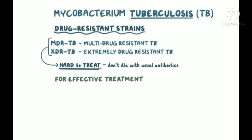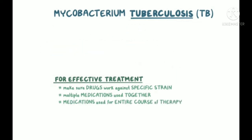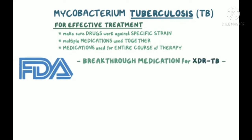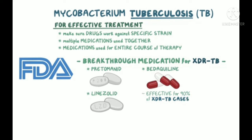The bottom line for effective treatment is to make sure the drugs being used will work against the specific strain of TB, that multiple medications are used together to prevent drug resistance from developing, and that medications are taken for the entire course of therapy so that all of the Mycobacterium tuberculosis is killed off. Recently, the US Food and Drug Administration approved a breakthrough medication for XDR-TB called Pretomanid. According to recent studies, a combination of Pretomanid, Bedaquiline, and Linezolid has been effective for almost 90% of XDR-TB cases. As an added bonus, this combination therapy can be taken orally and is very well tolerated compared with other XDR-TB drug regimens.